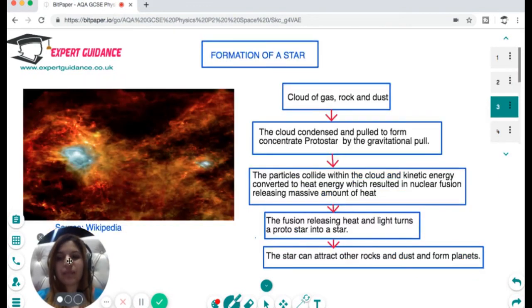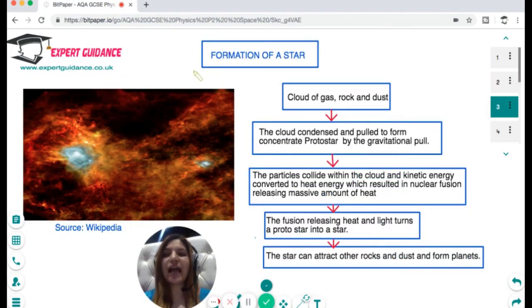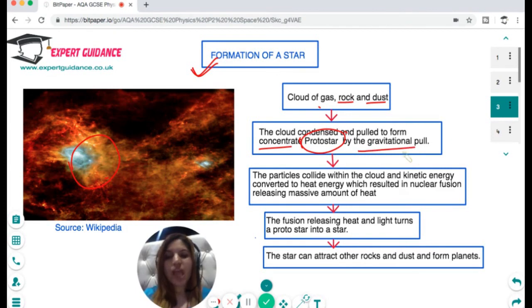After the solar system, it's very important to understand how the star formed. A star originally is a cloud of gas, dust. The cloud condensed and the particles collide within the cloud, and the kinetic energy converted into heat energy which gave them sufficient energy to carry out nuclear fusion.